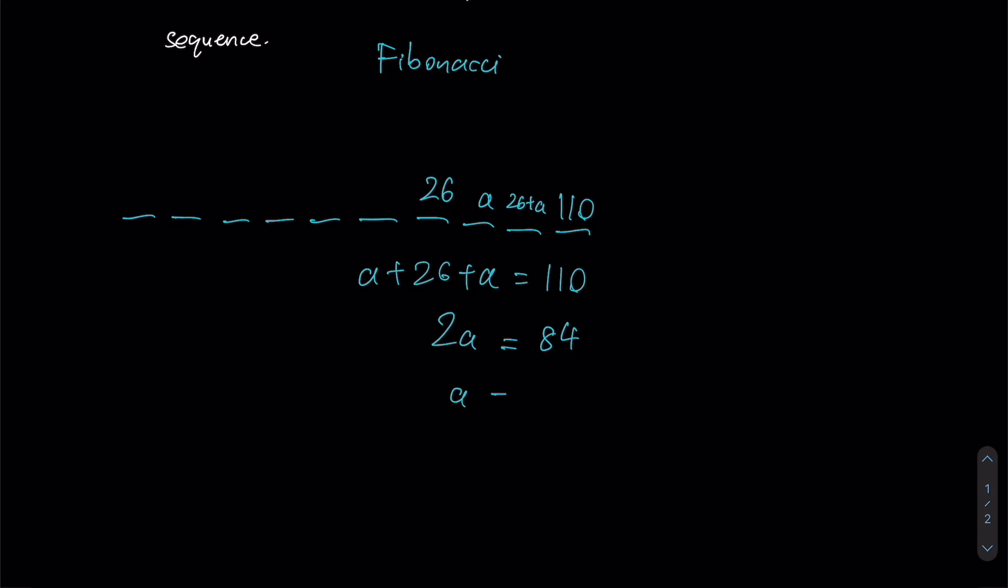Now that we know a equals 42, we can then replace any instance of a here with 42 itself. So then 42 plus 26 here will give us 68.